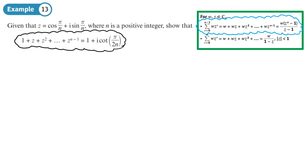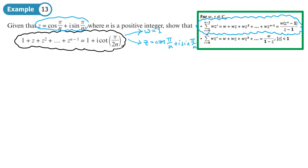The first thing to recognise is that we'll be using the finite sum rule. We need our complex numbers in the form w·z^r. Since the first term is w and the second term is wz and so on, I can see that w is 1, because the first term is 1. And z is given in the question: z = cos(π/n) + i·sin(π/n).